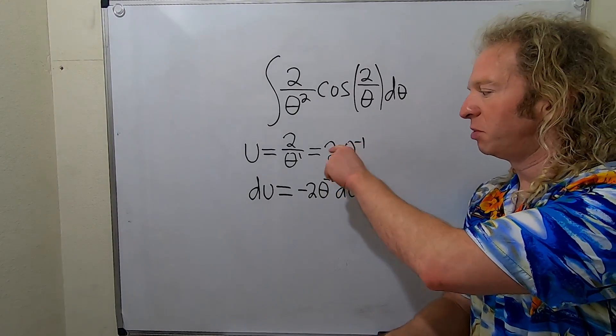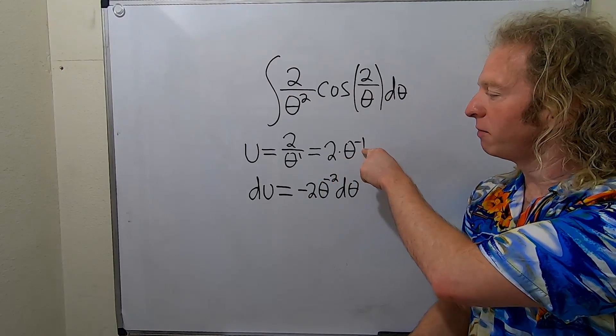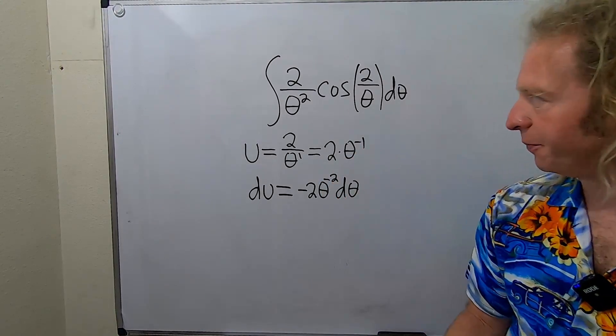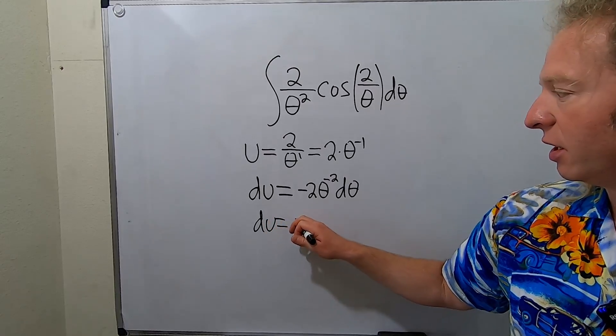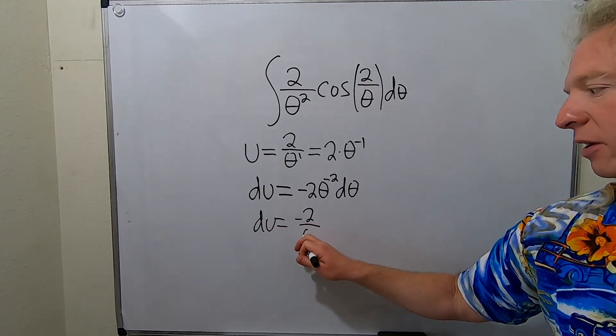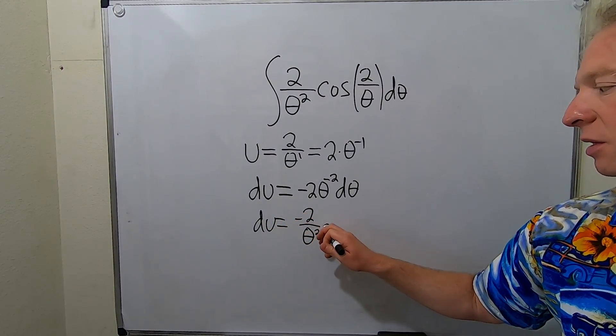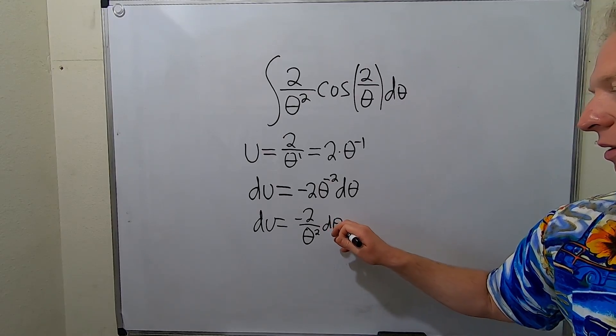Again that's the power rule. You put this number in the front and then negative 1 minus 1 is negative 2. Let's go ahead and bring this down. So we have du equals negative 2 over theta squared d-theta.